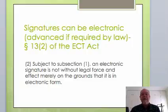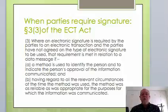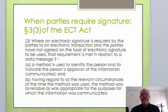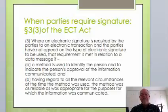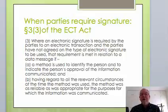Subsection 13.2 of the ECT Act says that, subject to where advanced signatures are required by law, no signature is without legal force and effect merely because it is in electronic form. Where an electronic signature is required by the parties to an electronic transaction and the parties haven't agreed on a type of electronic signature to be used, that requirement is met in relation to a data message if a method is used to identify the person and to indicate the person's approval of the information communicated, and having regard to all relevant circumstances, the method used is as reliable as is appropriate for the purposes for which the communication was intended. So if the parties — not the law — require a signature but the type is not agreed, any method that is as reliable as is appropriate will work.